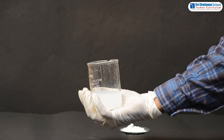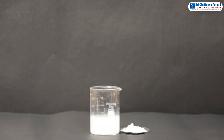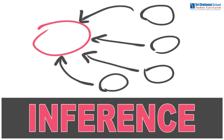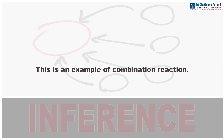So what did you observe, my dear children? The observation is: quick lime reacts with water vigorously with evolution of a large amount of heat during the course of the reaction. The inference of this experiment is: in this reaction, two compounds quick lime and water combine to give slaked lime, a single product. This is an example of a combination reaction.